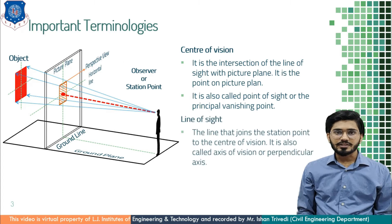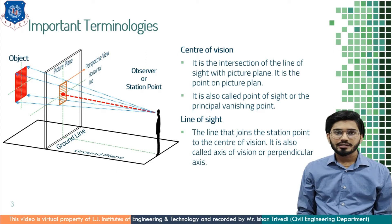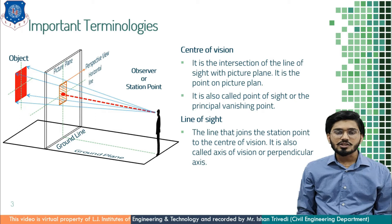The next definition is line of sight. It is the line that joins the observer, or station point, to the center of vision. It is also called axis of vision or perpendicular axis.